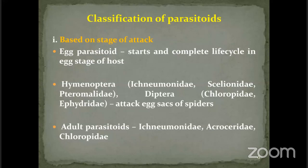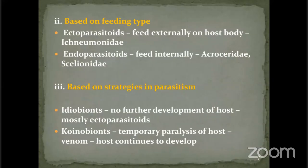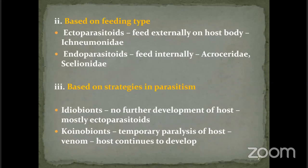Among adult parasitoids, Ichneumonidae is known to attack adult spiders, and Acroceridae is exclusively parasitic on spiders — I'll explain what exclusively means. Chloropidae is also known to attack adult spiders. Based on feeding type, we classify as ecto- and endoparasitoids. Ectoparasitoids develop externally, feeding on the hemolymph of the spider externally, and eventually kill the host, leaving the host before pupation.